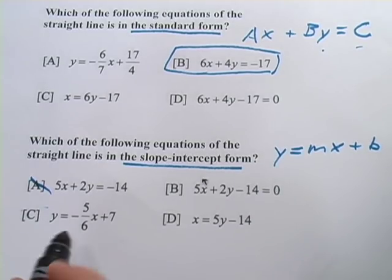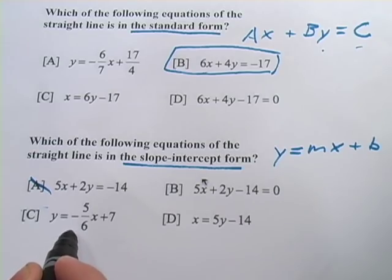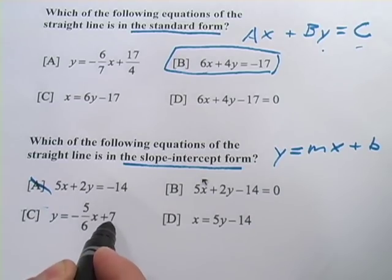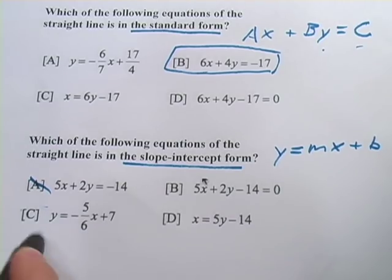Aha, C has y alone. We have negative 5/6 times x, so the slope of this line is negative 5/6. And then we have plus 7, so it crosses the y-axis at a positive 7. That looks like the right one.